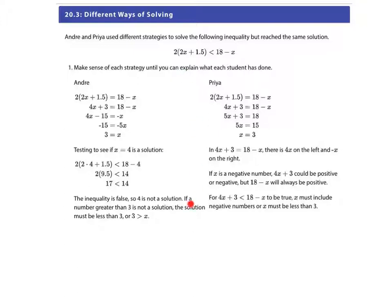So if we see that split down the middle, we have Andre and Priya. Let's talk about Andre first. Let's look at our inequality first. I have 2(2x + 1.5) < 18 - x. Let's see what Andre did with it. Andre changed that inequality into an equality, then distributed the two, left the right side alone. It looks like we subtracted 18 from both sides, subtracted 4x from both sides, divided both sides by negative 5 and got x equals 3.